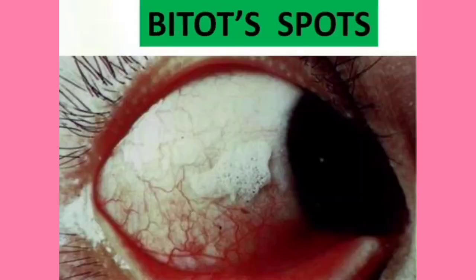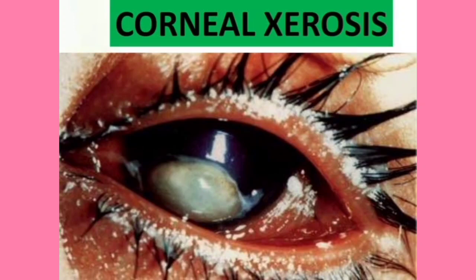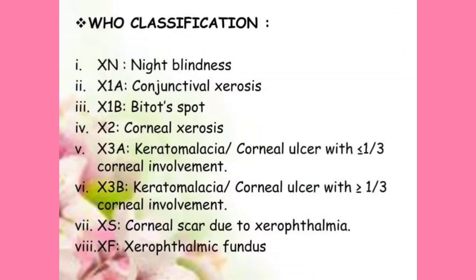These are eye conditions due to Vitamin A deficiency. Let us learn about the WHO classification of Vitamin A deficiency, which is very important for exams like NEET PG, FMG, and INITIATE examinations. Every year they will give you classifications: XN, X1A, X1B, X2, X3A, X3B, XS, and XF — all these have different meanings.